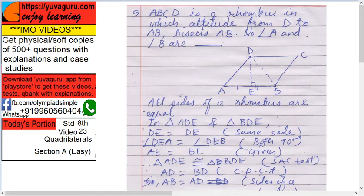Now, what is next given? The altitude from D bisects AB in half. So AE equals EB. This is the altitude and these two are half of AB. So AE equals EB.